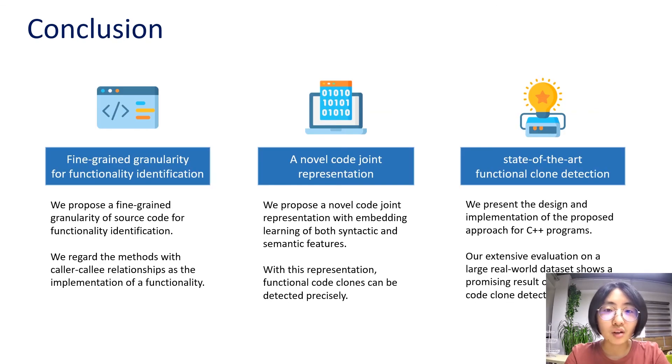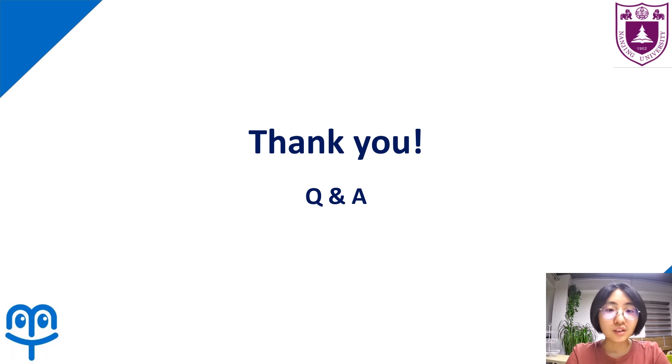Now, I'd like to make a conclusion for my presentation. We have presented a novel approach to detect functional code clones with code representation generated from a fusion embedding learning of semantic and syntactic information at functionality granularity. And a deep feature learning model that learns syntactic and semantic features which converts code clones into a binary classification problem. And we have conducted extensive experiments on a large real-world dataset. The results show that our approach achieves a significant advance over state-of-art approaches in terms of F1 measure. And it has good detection efficiency after the model training. Thank you for your listening. If you have any question, please feel free to ask. Thank you.